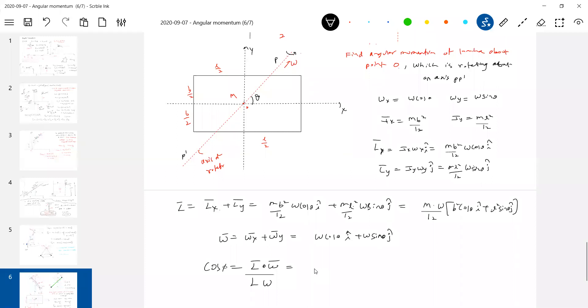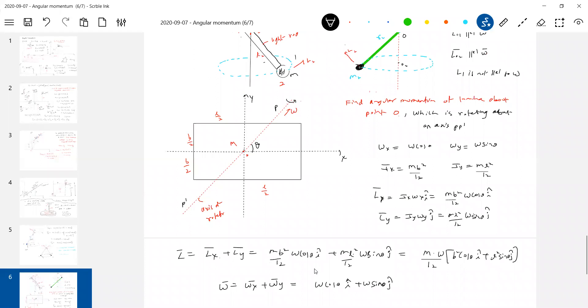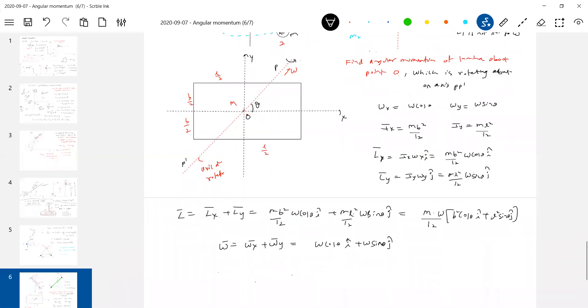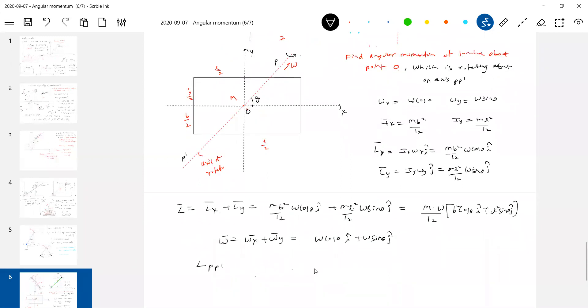Cos phi is equal to L bar dot omega bar by L omega magnitude. Substitute here. You'll get that angle. If you get this equal to zero, then L bar and omega in same direction. If you get this non zero, then there is some angle. I think that's the best way of analyzing. Or I want component of L bar along PP dash. So what is the question asked?